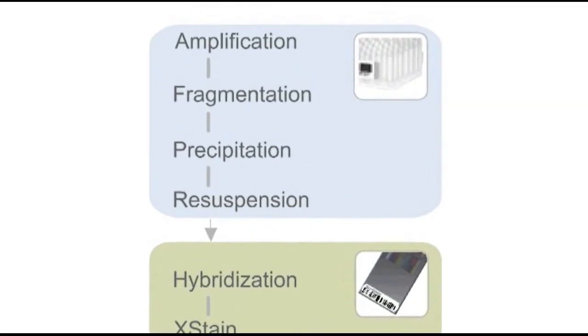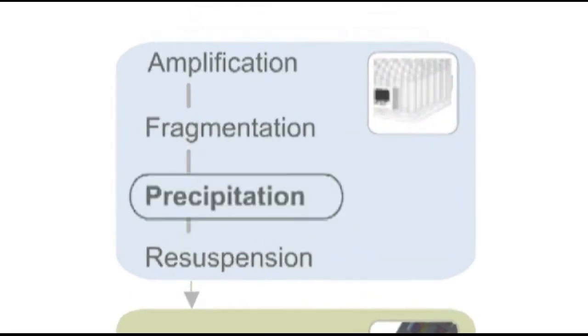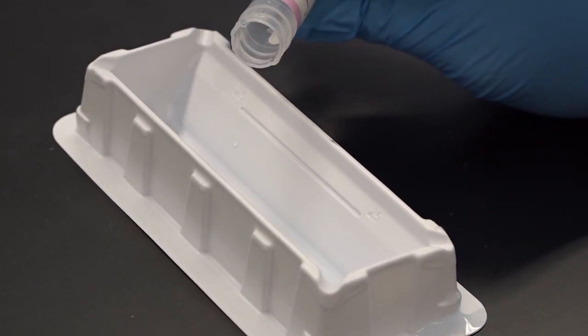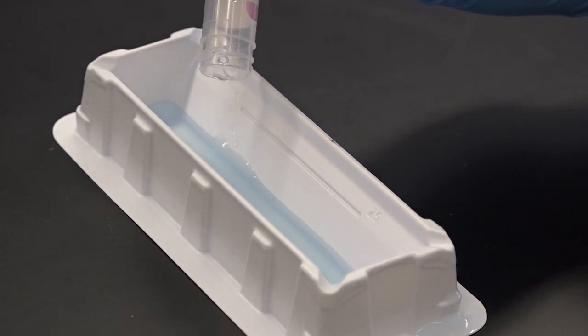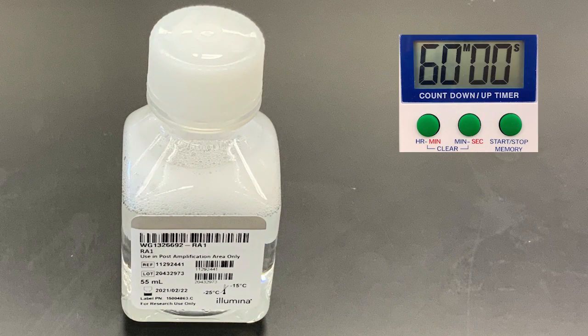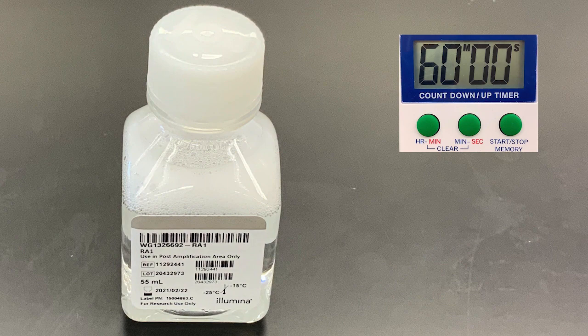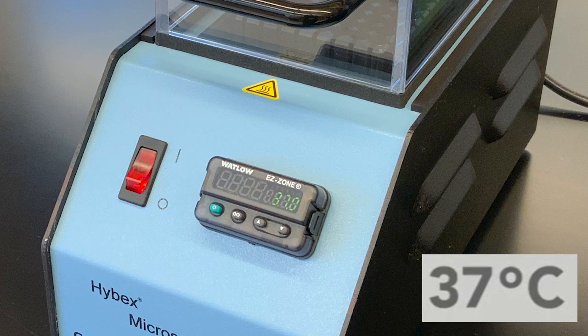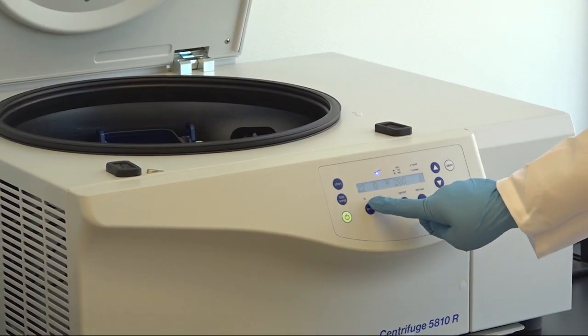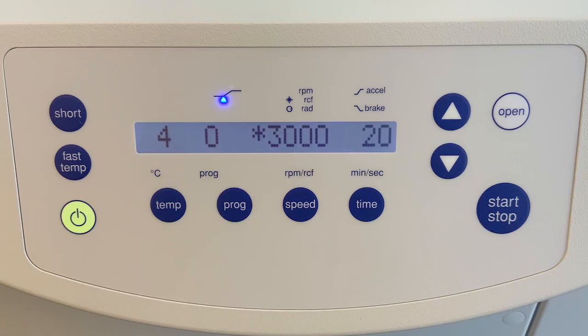The next step in the Infinium assay is precipitation. Remove the precipitation reagent from four degrees Celsius and allow to equilibrate to room temperature. Also at this time, remove the resuspension reagent from the freezer to allow it at least one hour to thaw. Set the heat block to 37 degrees Celsius and set the centrifuge at four degrees Celsius.